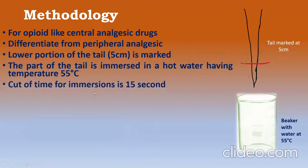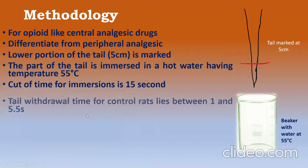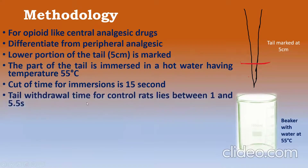The cut-off time for this immersion is 15 seconds. The tail withdrawal time for a control rat lies between 1 and 5.5 seconds — that is, when you keep a control rat without any drug, its tail withdrawal time lies between 1 and 5.5 seconds.